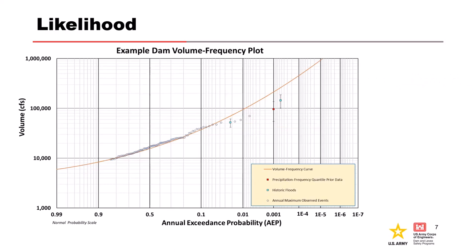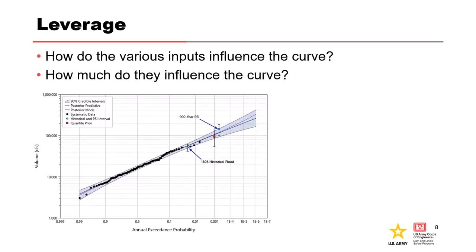This one is probably an unlikely LP3. However, in the uncertainty of things, this data technically could have come from this curve — it might just be unlikely. Let's go through the various inputs and see how they're influencing these curves.